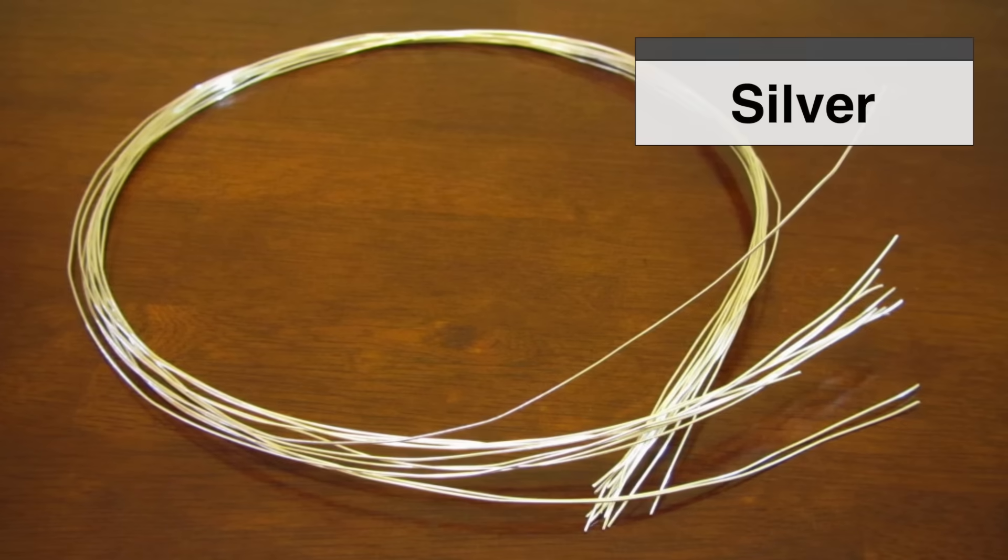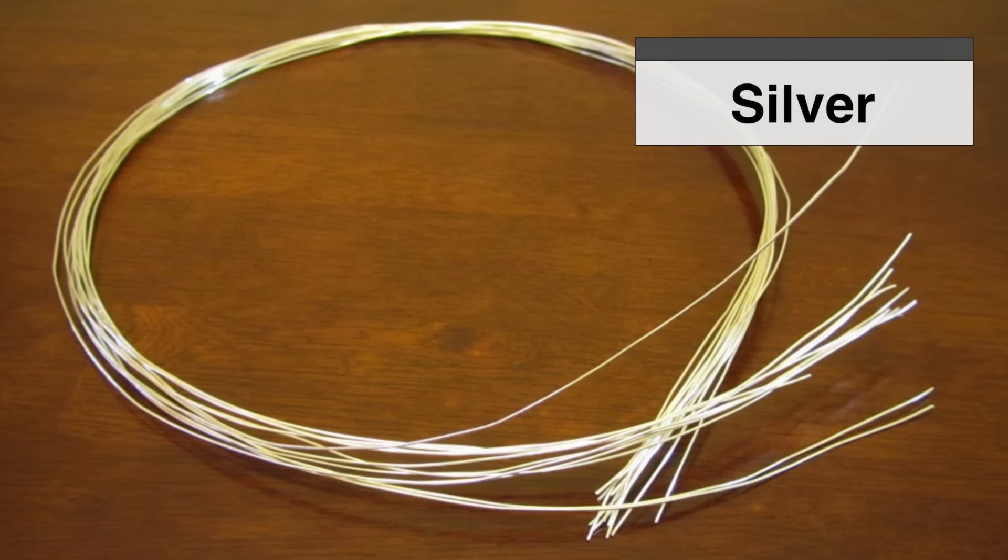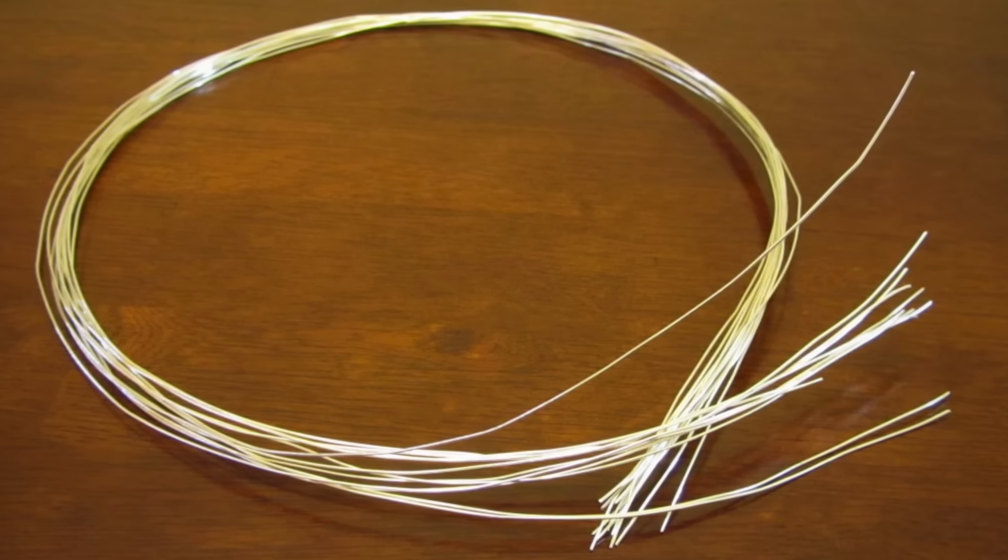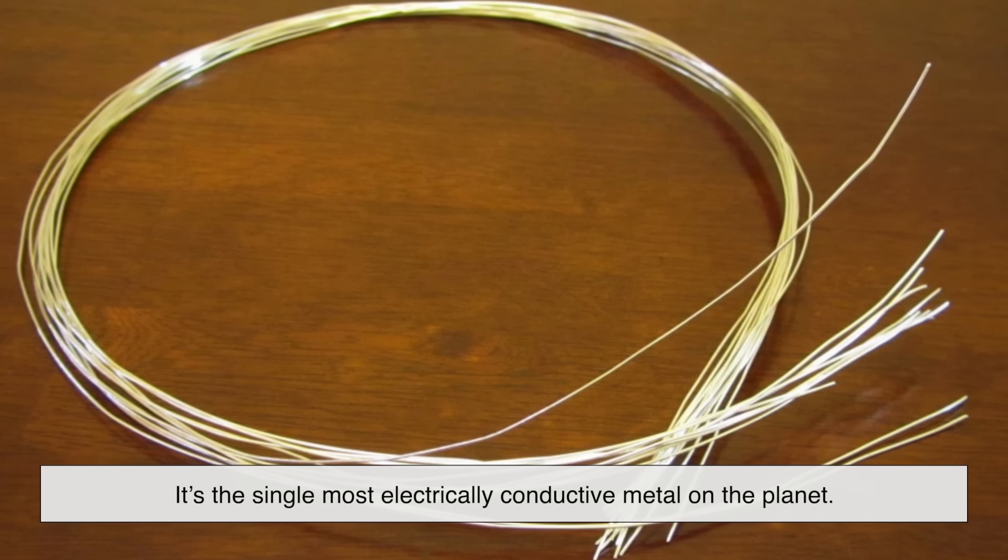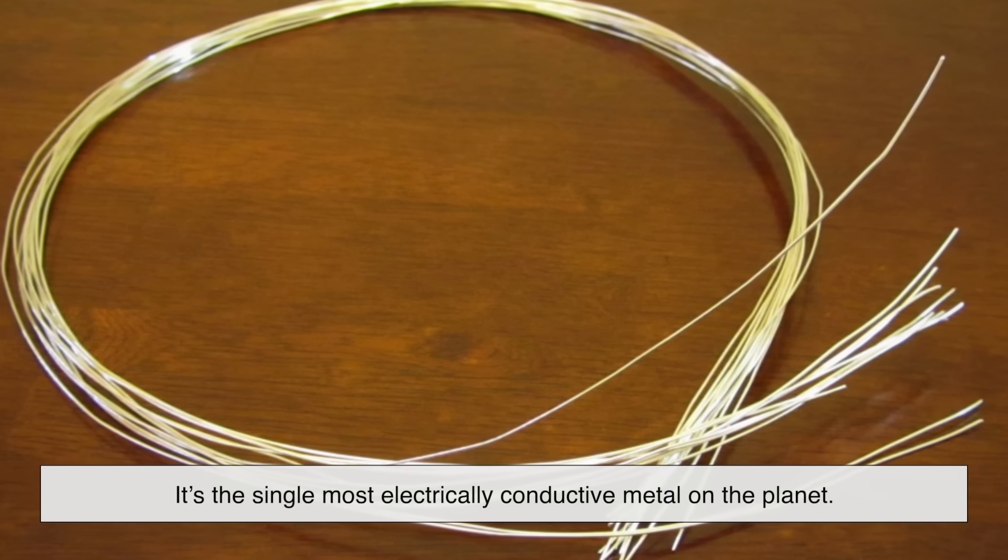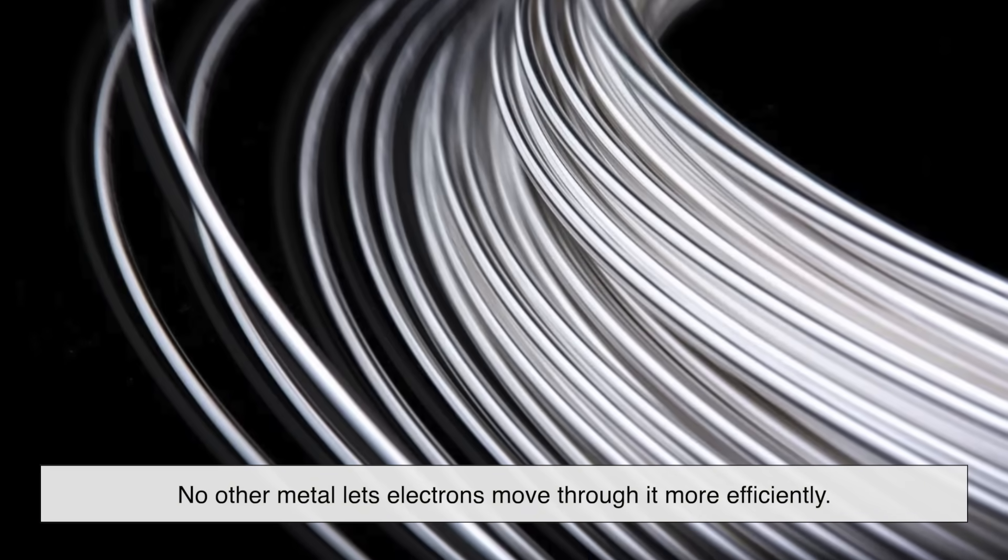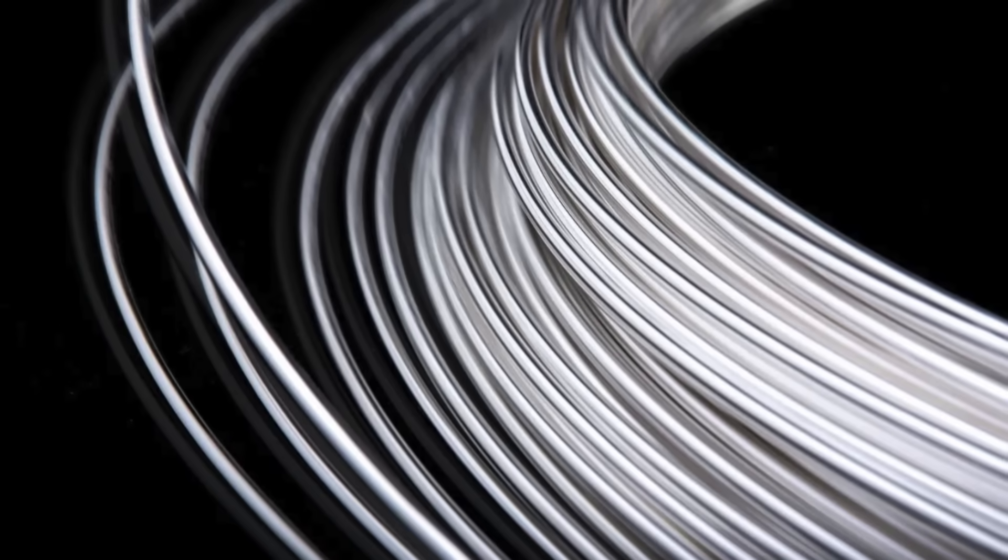Let's talk about silver first. In the conductivity Olympics, silver takes the gold medal. It's the single most electrically conductive metal on the planet. No other metal lets electrons move through it more efficiently. But why?